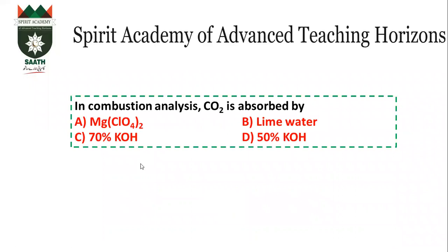In combustion analysis, carbon dioxide is absorbed by KOH — KOH is the carbon dioxide absorber — and MgClO₄ is the water absorber. The percentage of KOH is not 70%, it is 50%. So the answer becomes D.